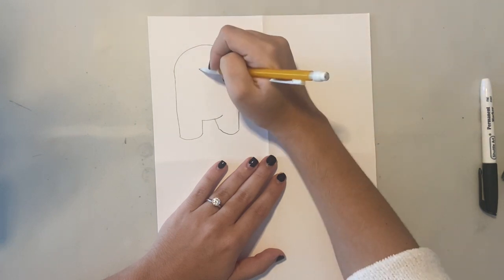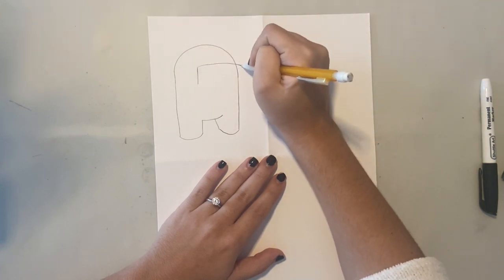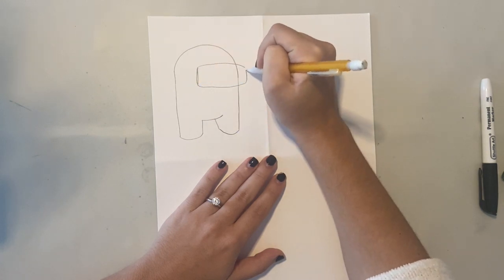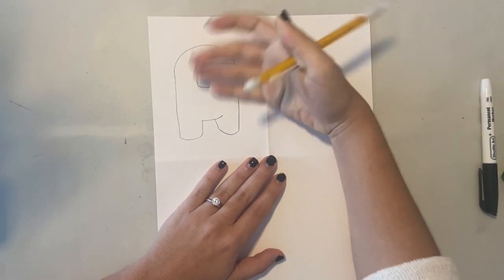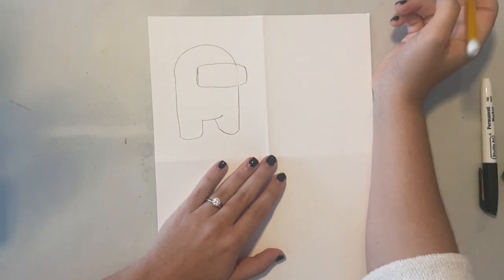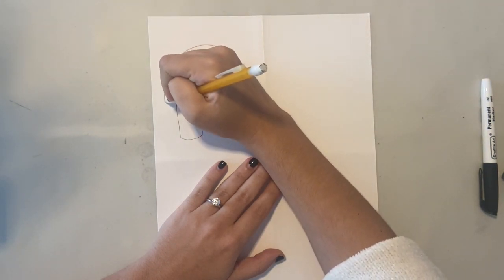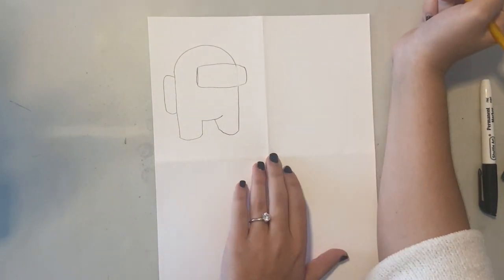Add another little U-shape on the right side. And then you're going to draw a rectangle that has kind of rounded edges on the right side of the character. You can go back in with your pencil and erase that little spot. And then add the backpack on the back, which is just a skinny rectangle with some rounded edges.